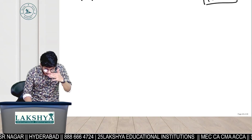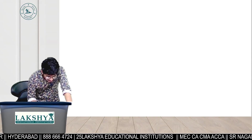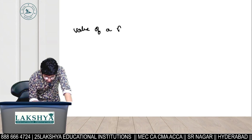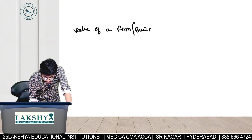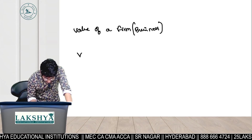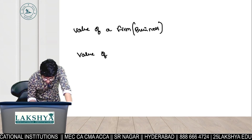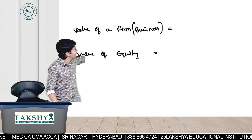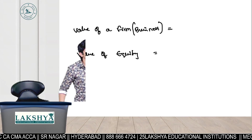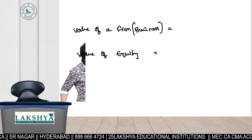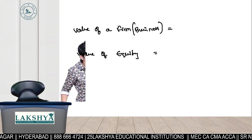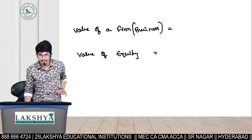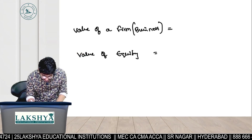This topic discusses just two formulas. One is the value of a firm, which is nothing but the value of a business, and another one is the value of equity. So just two formulas: first formula is value of a firm and another formula is value of equity. We'll explain conceptually and then apply the same concept to the second formula.